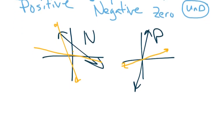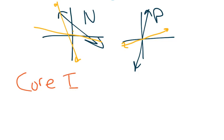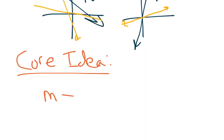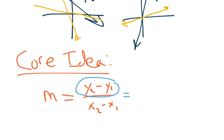The next core idea is the formula for slope. Slope is often referred to with the variable m. To calculate it, you need two points: you take one y coordinate and subtract the other — that goes in the numerator as y2 minus y1. Then in the denominator you do x2 minus x1, subtracting the x coordinates. This calculates the difference in height over the difference left to right — that ratio of rise over run.